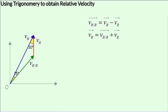First, let's take a look at the formula V_B with respect to R equals V_B minus V_R, which is the formula for relative velocity, which we are familiar with.